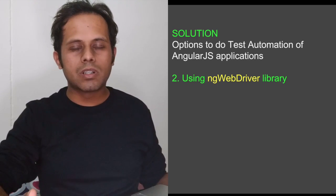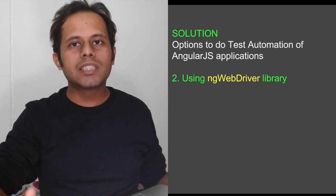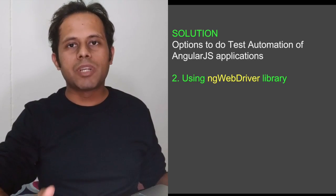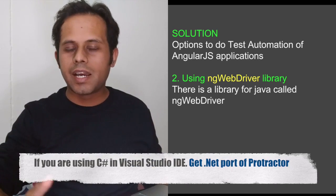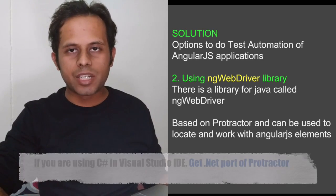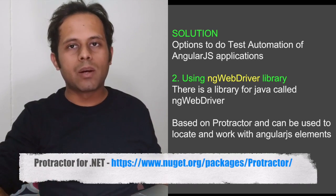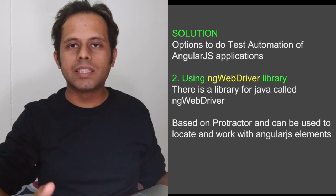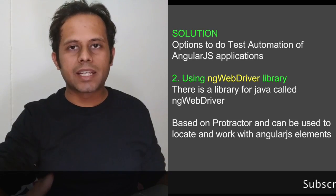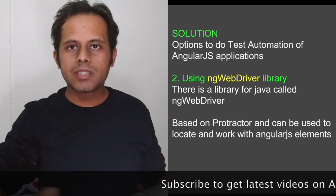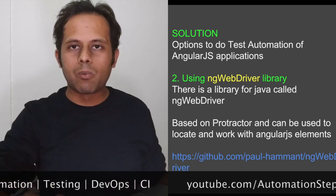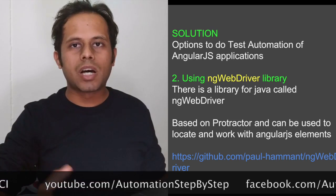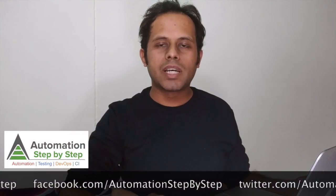The second option is for those using Selenium with Java or who already have a framework in Selenium Java — there is good news. There is a library called ngWebDriver. This library is based on top of Protractor and it covers all the extra attributes present in the AngularJS application. Using this library you can easily find or take actions on AngularJS elements. There is a GitHub page for this library where you can download it and get all the information on how to use it.